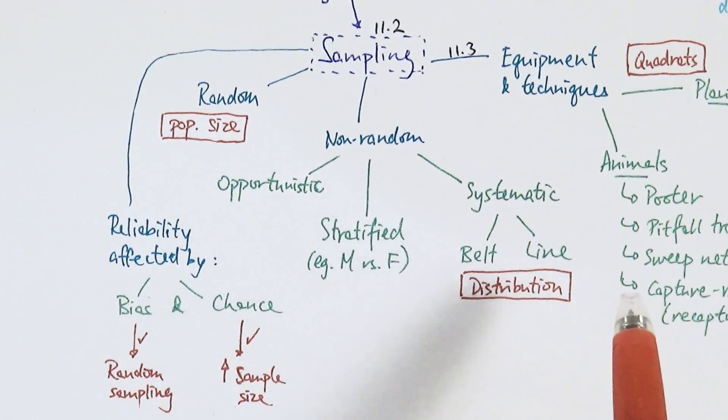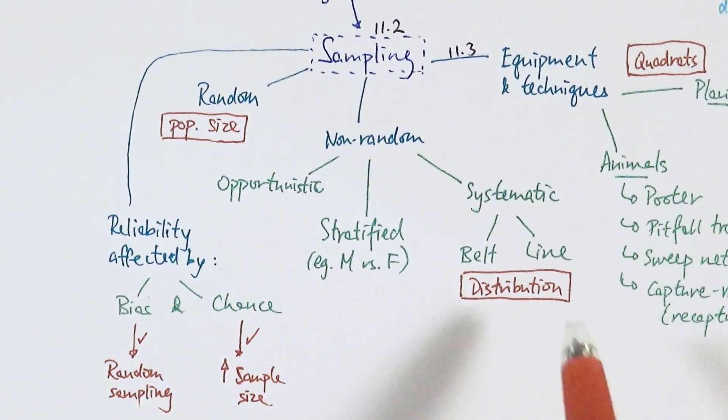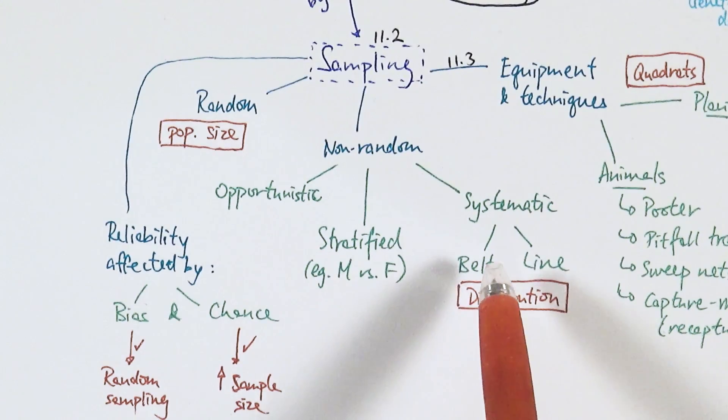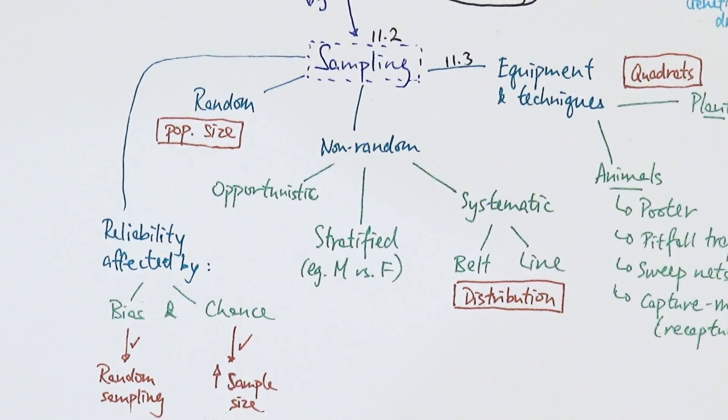The more common type is systematic sampling, often done with random sampling when investigating something. We have two types: belt and line transect. They're used to find the distribution of particular species along a change of environment. The difference is line uses one tape measure, while belt uses two tape measures and you measure in between them.